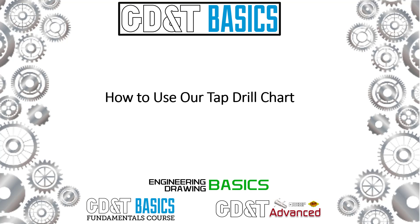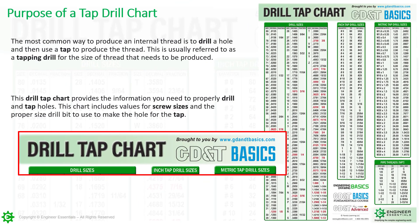Hello everyone, Brandon John here with gdntbasics.com. We have created a tap drill chart and wanted to go over with you how to use this chart. The most common way to produce an internal thread is to drill a hole and then use a tap to produce that thread. We refer to this as a tapping drill for the size of the thread that needs to be produced.